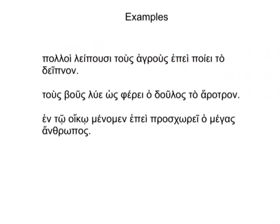Our second sentence means: release the axon when the slave brings the plow. Here again we have two clauses — how do I know? Two verbs: lua, an imperative verb, and fere. There's also a clause marker, hos, which introduces our dependent clause.